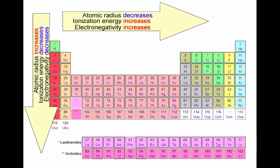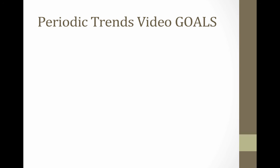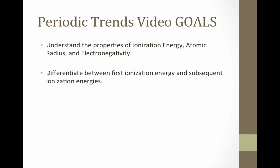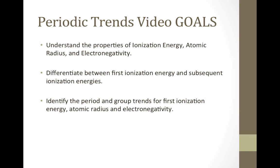Here's a summary of the three properties we talked about in this video. You should notice that atomic radius corresponds to ionization energy and electronegativity — as atomic radius decreases, electrons come closer to the nucleus, causing ionization energy and electronegativity to increase, and vice versa. That brings us to the end of this video. We defined ionization energy, atomic radius, and electronegativity, differentiated between first and subsequent ionization energies, and identified and explained period and group trends in terms of atomic structure. See you in the next video.